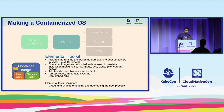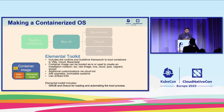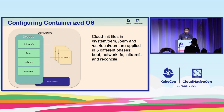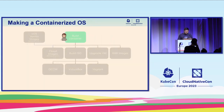You can also customize with Cloud-Init. It does AB upgrades and is immutable, and you can embed K3S. It also includes Grub for the bootloader and uses Dracut to create the initial image used by the kernel to preload block device modules so we can access the root filesystem. For customizations, if you have CloudInit files in specific directories, they can be applied in five different phases: boot, network, FS, initRAMFS, and reconcile.